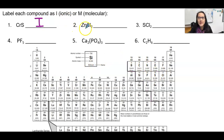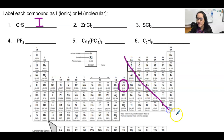Number two: zinc and chloride. Zinc is found here on the left side of the staircase, and chlorine is found here on the right side. This is a metal and a non-metal, therefore it's an ionic compound.